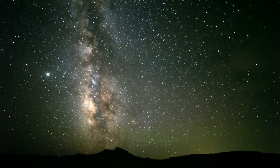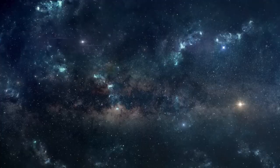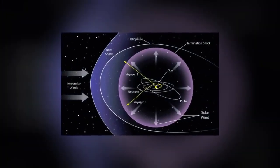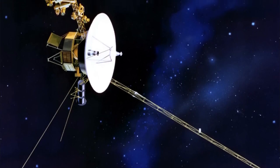Outer space continues to defy our expectations, and Voyager 2's observations as it crossed the heliopause, the boundary between the heliosphere and interstellar space, are shedding light on some of the solar system's greatest mysteries.